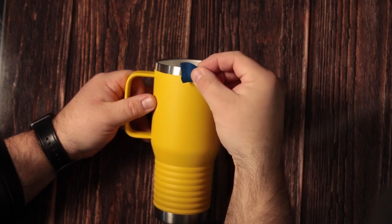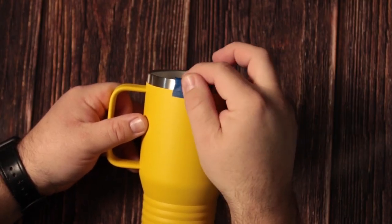How we start off is we take a piece of tape and we put it kind of where we think the center point is on one of these travel mugs.